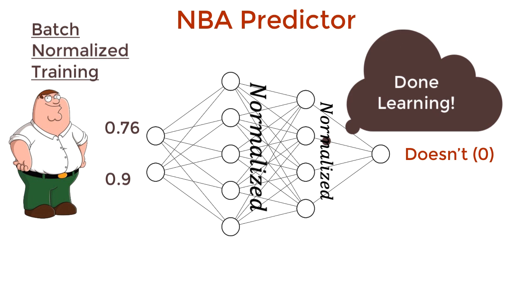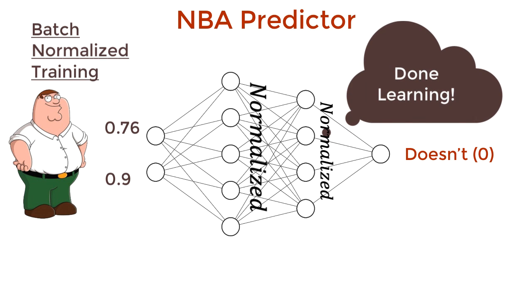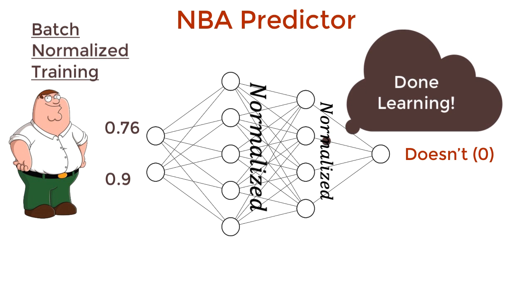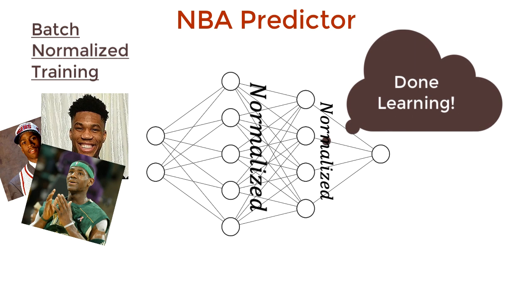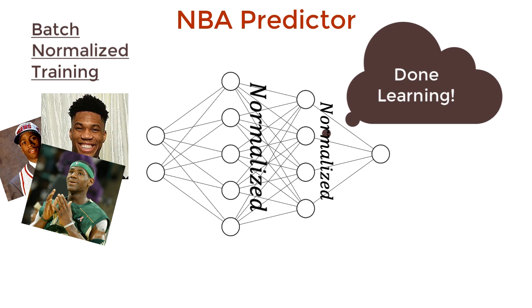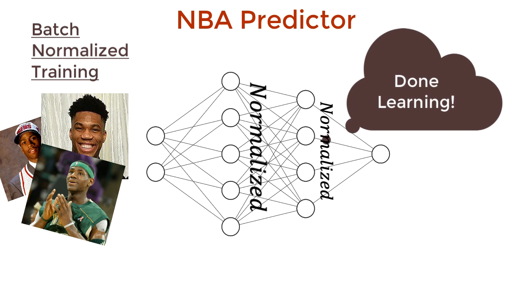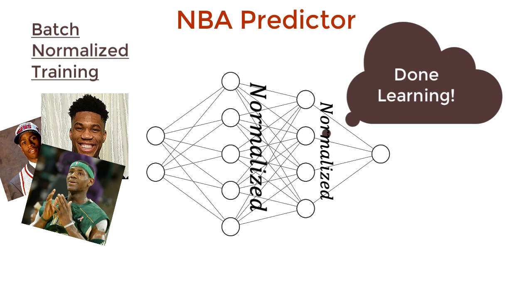This is even faster during training time. And it's called batch normalization because we normalize the values with respect to the batch of inputs. This is the overarching principle, but I'm going to explain this in detail with the math later on. But first, let's ease into the technical stuff.